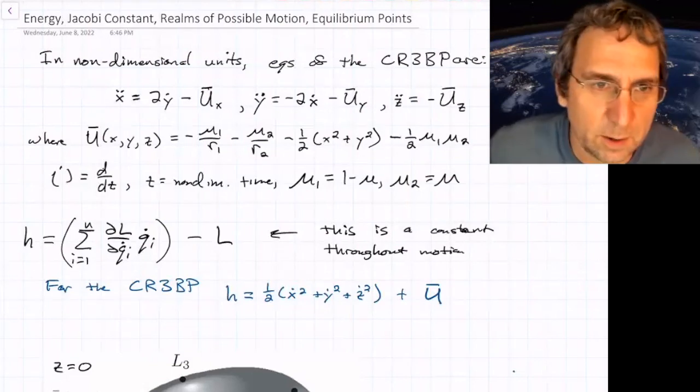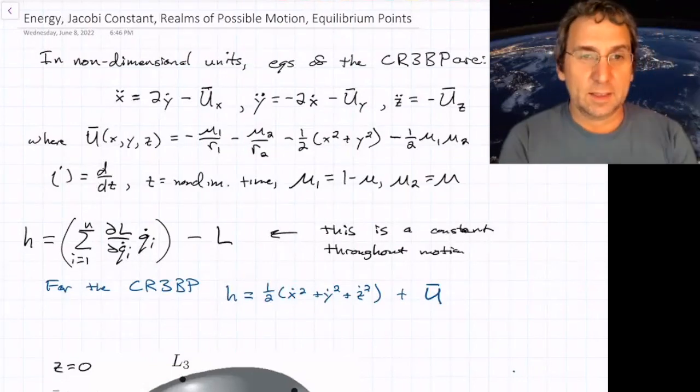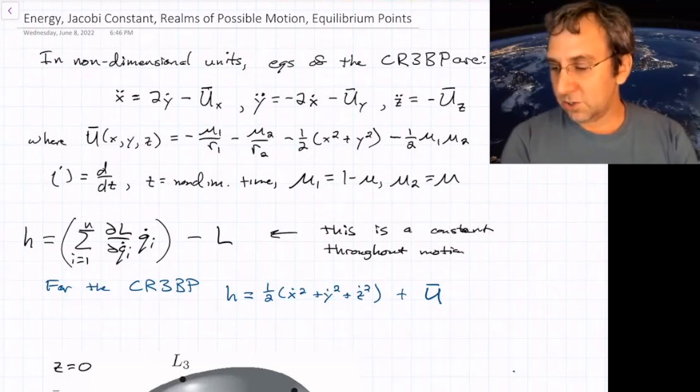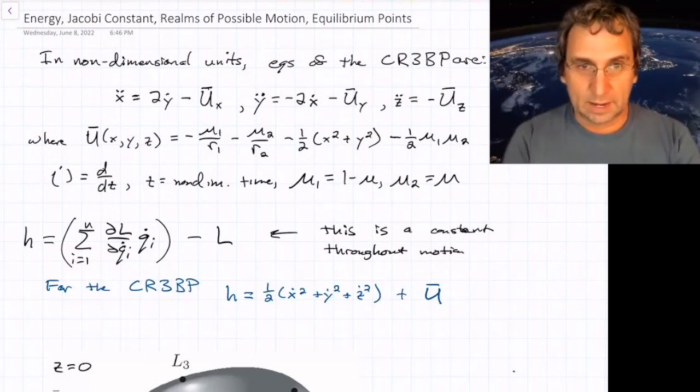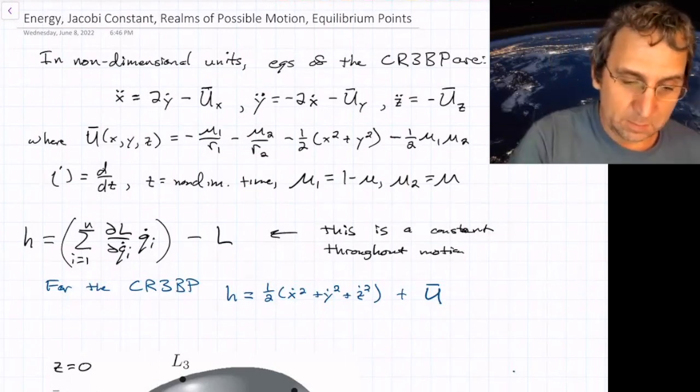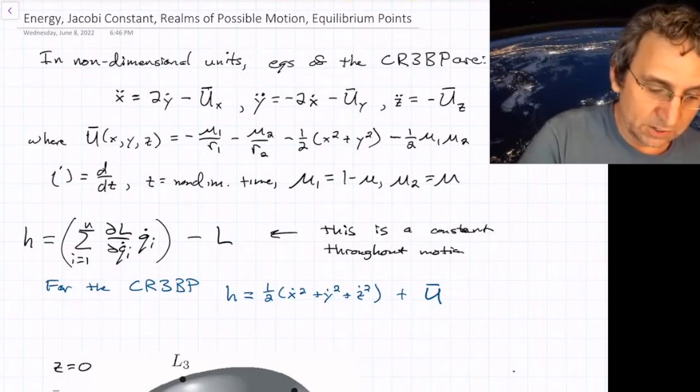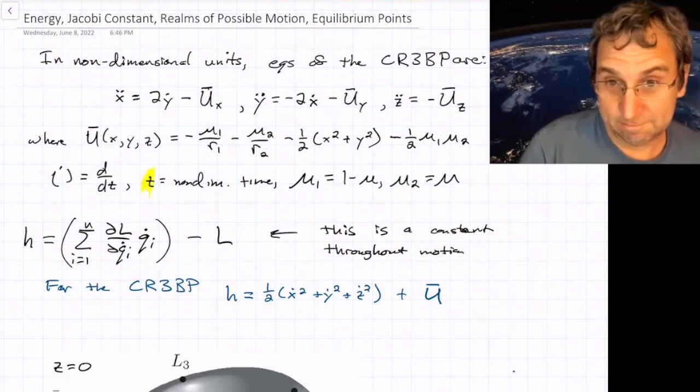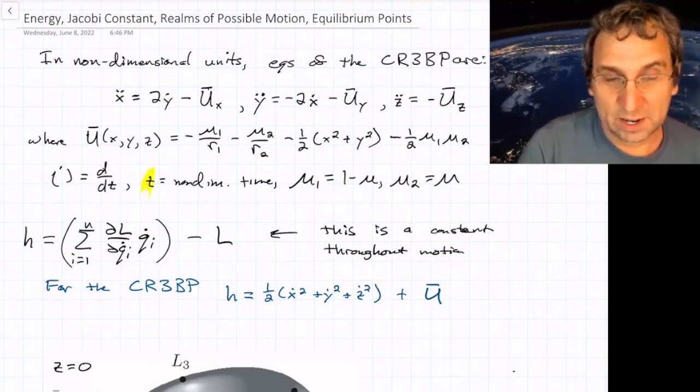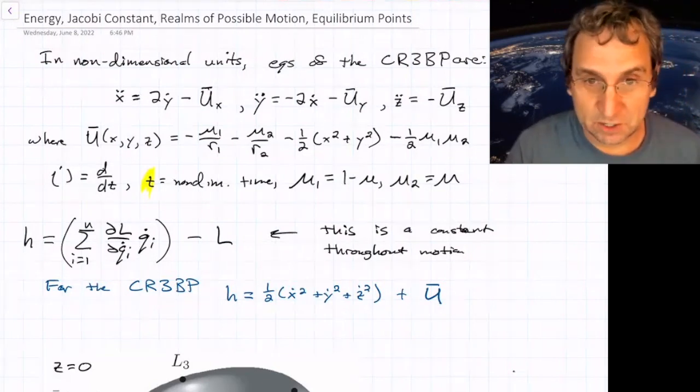So these are some notes from last time. We got the equations of motion in the circular restricted three-body problem in non-dimensional units. And from now on, I'm going to be using, instead of tau for the non-dimensional time, I'm just going to use T. So when I do an overdot, that means derivative with respect to this non-dimensional time.